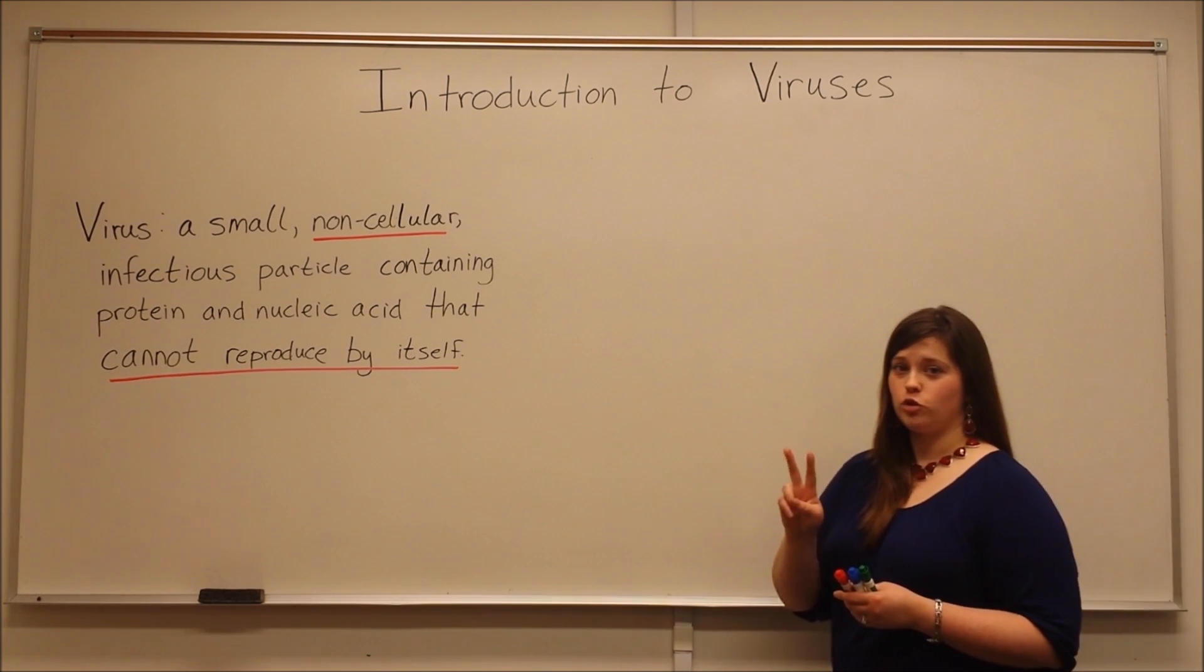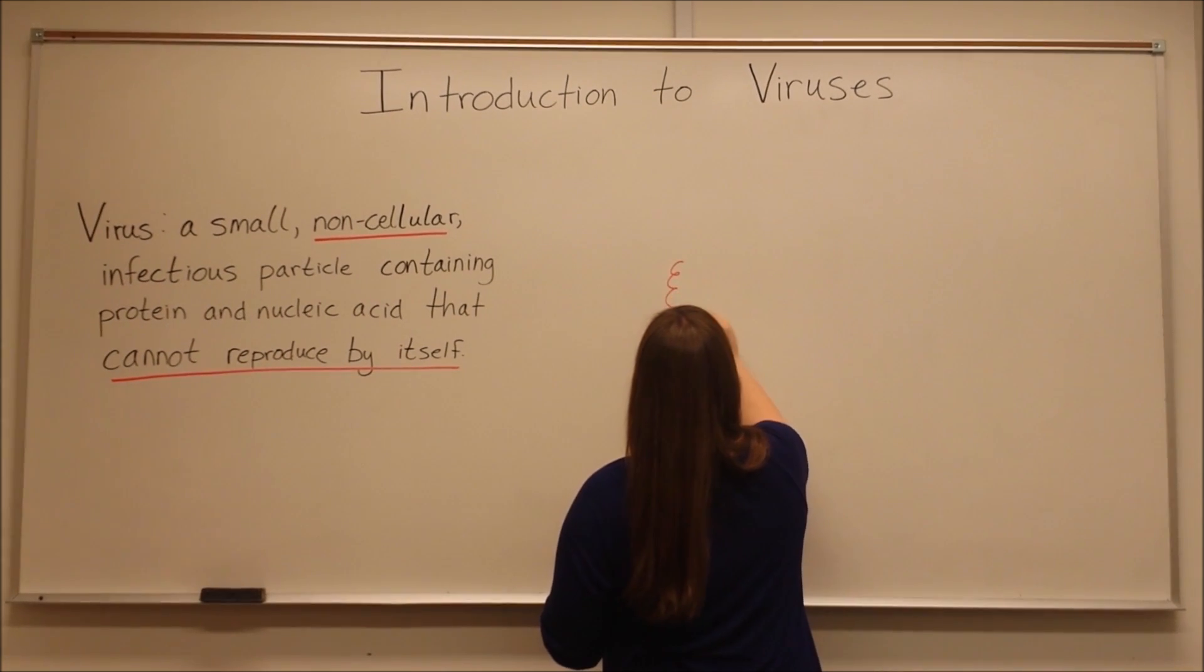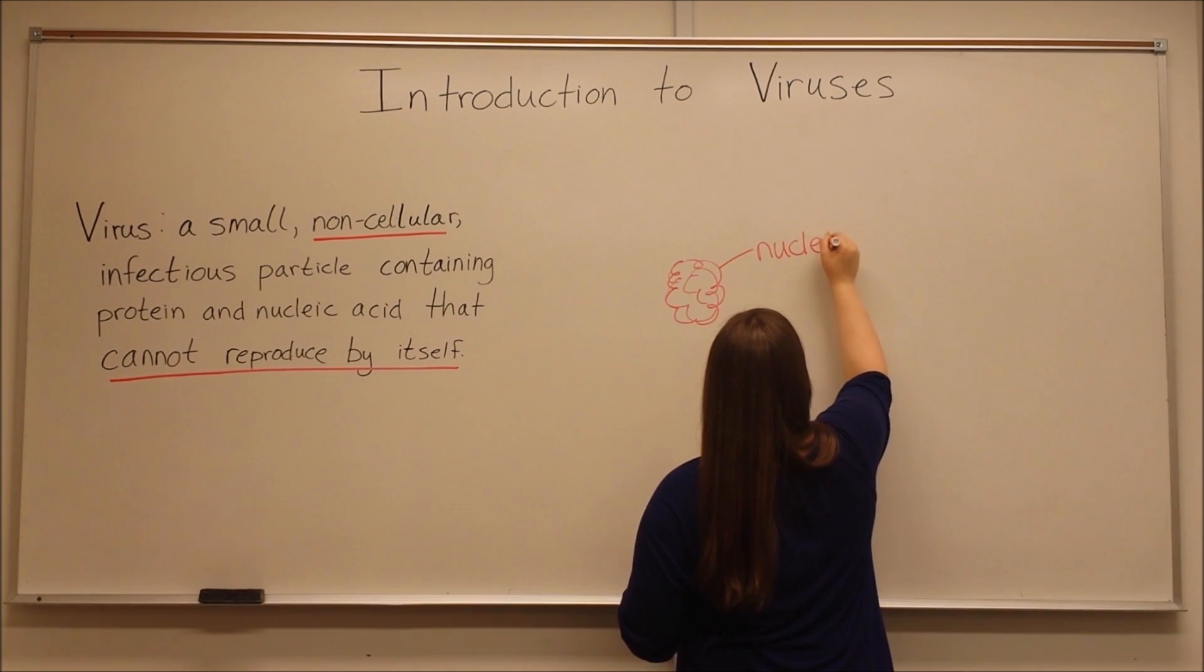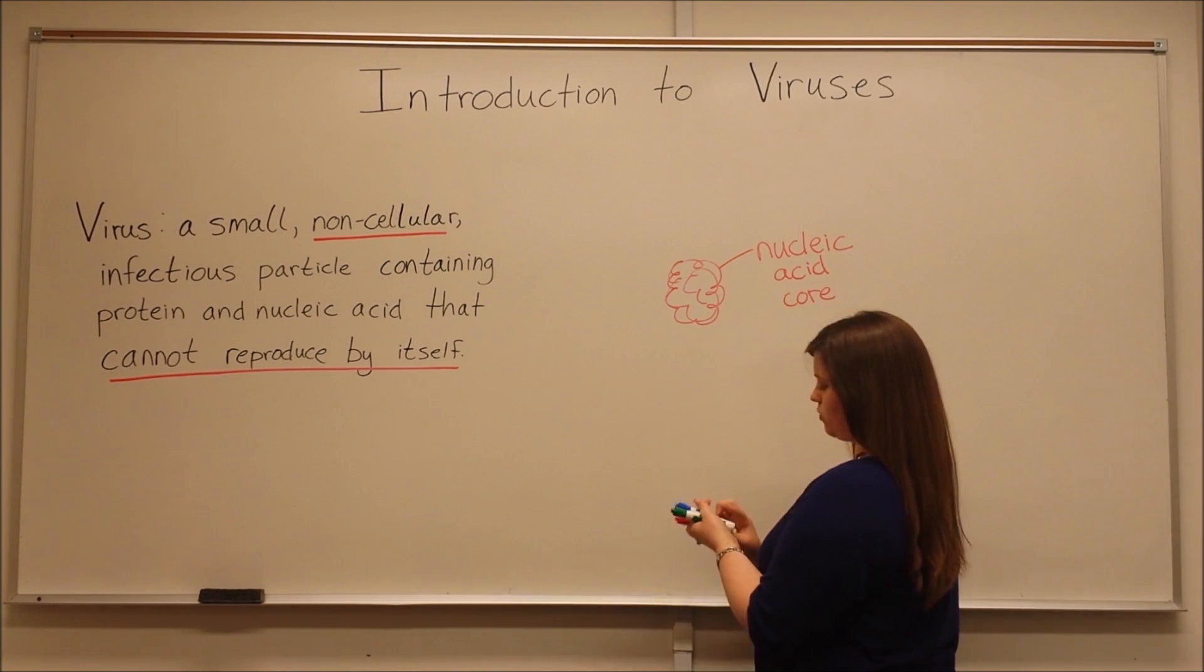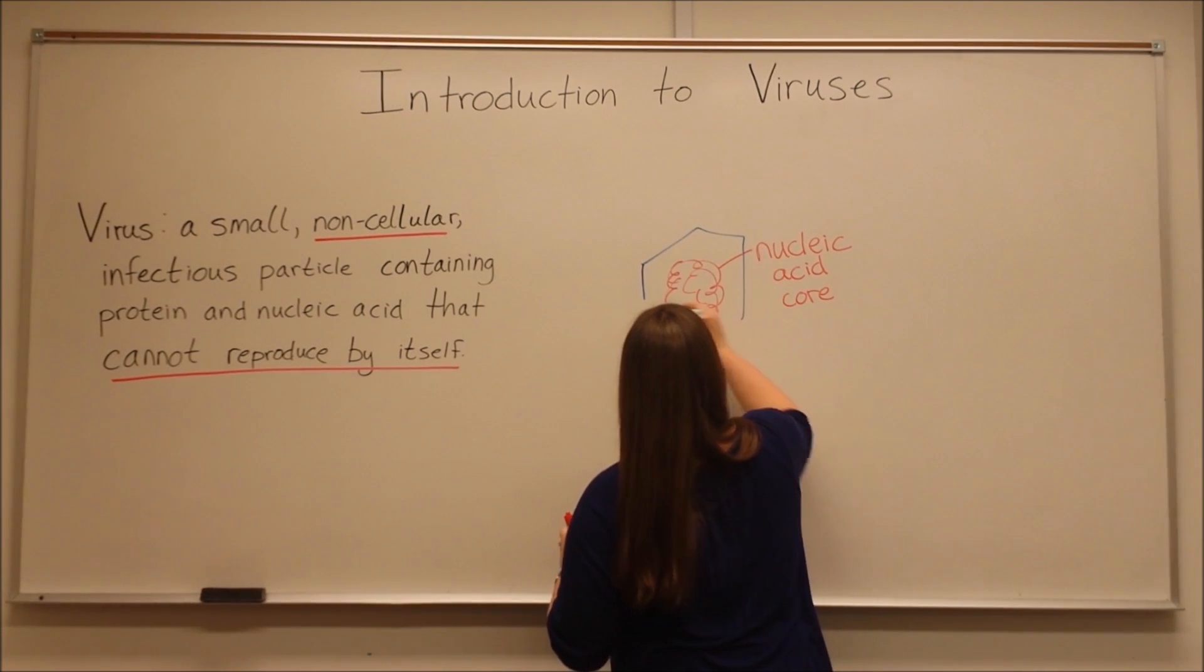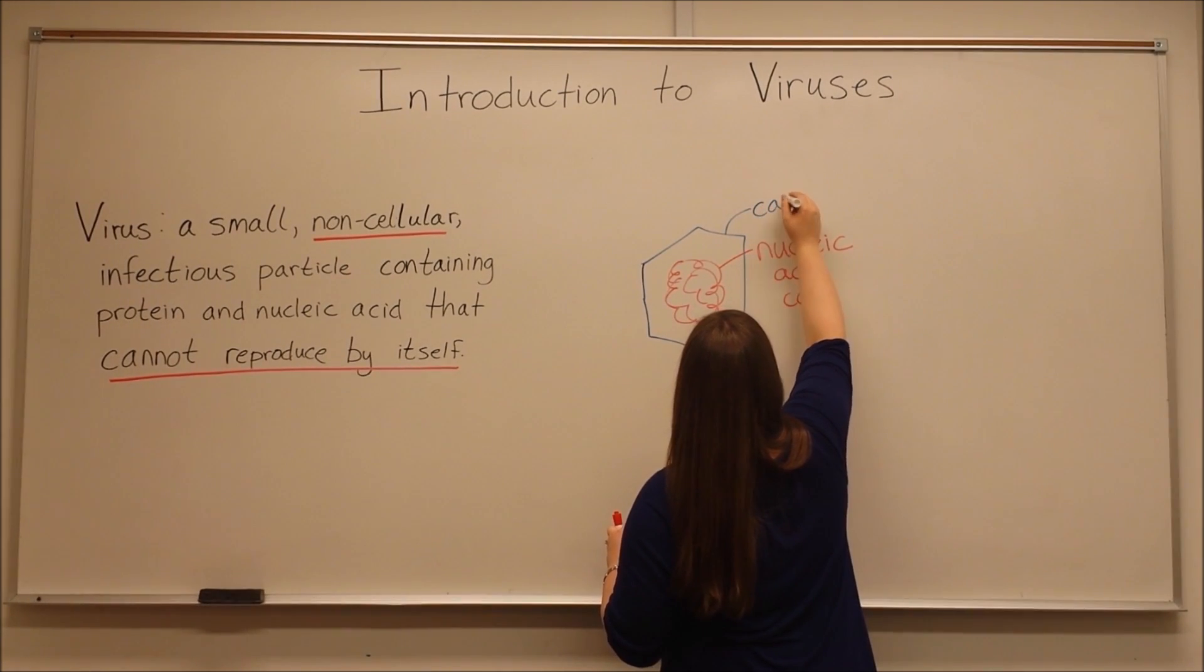All viruses have two main components. These are a nucleic acid core. This would be the genome. And this nucleic acid core is surrounded by a protein coat that is called the capsid.